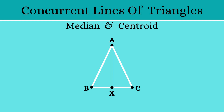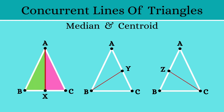In a similar manner, we can mark the midpoint of AC to be Y and join it to the opposite vertex B, so BY becomes the other median. In the same way, if Z is the midpoint of AB, then ZC becomes the third median. An important point to note here is that every median divides the triangle into two equal halves.